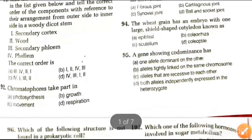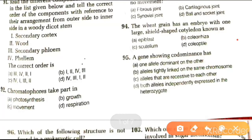Next question: a gene showing co-dominance. Options are: one allele is dominant over the other; alleles are tightly linked on the same chromosome; alleles that are recessive to each other; or both alleles are independently expressed in the heterozygotes. The answer is that both alleles are independently expressed in heterozygous condition.